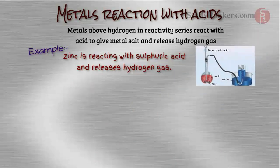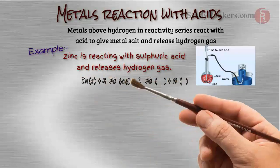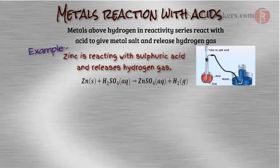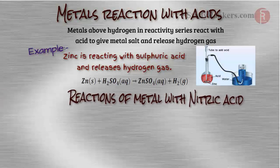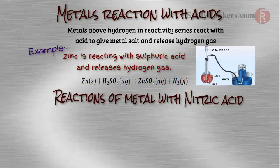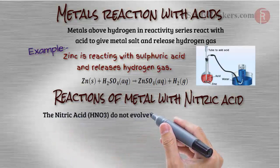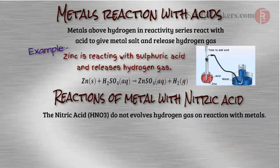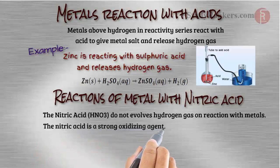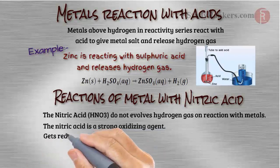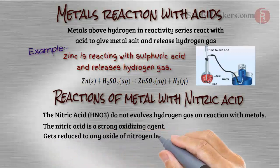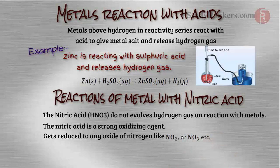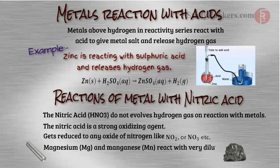There are exceptions considering reaction of metal with nitric acid. The nitric acid does not evolve hydrogen gas on reaction with metals. The nitric acid is a strong oxidizing agent. It gets reduced to any oxide of nitrogen like N2O or NO2, etc. But magnesium and manganese react with very dilute nitric acid to evolve hydrogen gas.